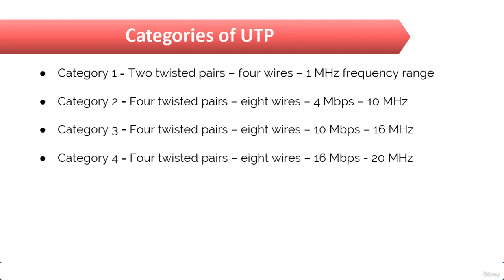Then comes Category 4, which contains four twisted pairs, that is eight wires, rated for 20 MHz and 16 Mbps. As you can see, as the category number increases, so does the data transfer rate and the frequency range.